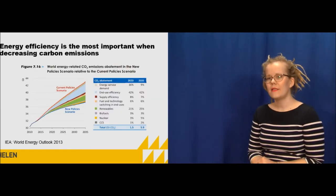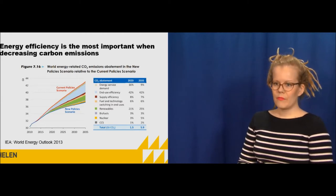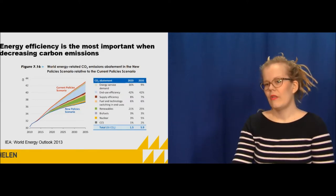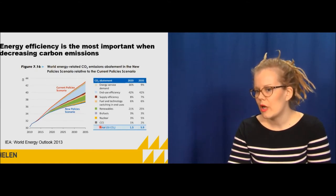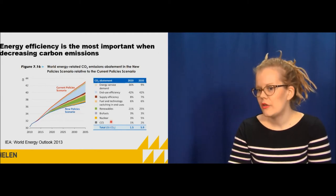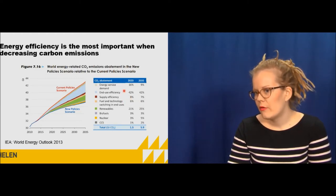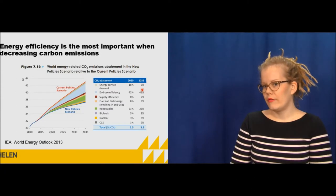If we go closer to energy efficiency, it's the most important when we decrease carbon emissions. This picture shows IEA's scenarios. The red one is the current policy scenario where carbon dioxide emissions rise quite a lot. The most important measures to decrease emissions are shown: carbon capture and storage has a significance of only one or two percent. Nuclear, biofuels, and renewables are also not that significant compared to energy efficiency. End-use efficiency plays a role of 42 percent according to the IEA — it's double compared to renewables. So energy efficiency is really playing a key role when we think about climate change and carbon emissions decrease.